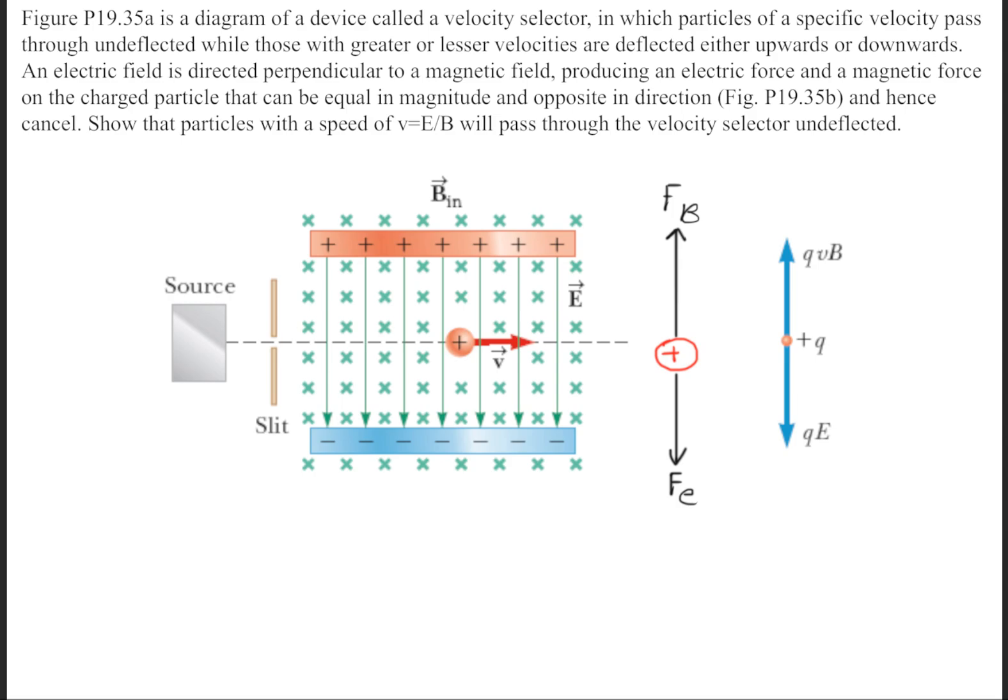So now let's go ahead and complete these equations. If we sum the forces in the y direction, we get that the magnetic force minus the electric force should equal zero.